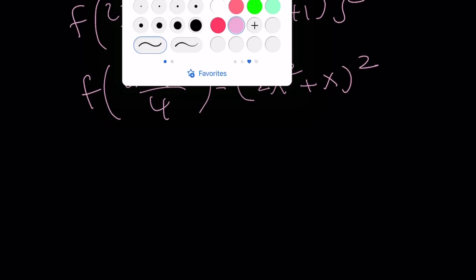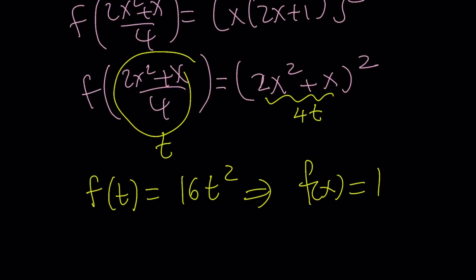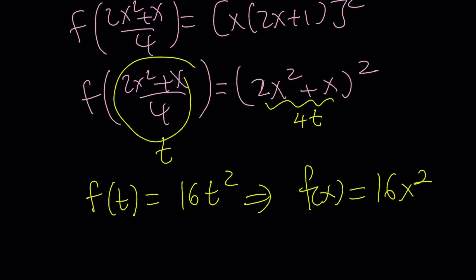If you call this t, this is going to be 4t. So we get f of t equals 16t squared, which means f of x can be written as 16x squared. This brings us to the end of this video.